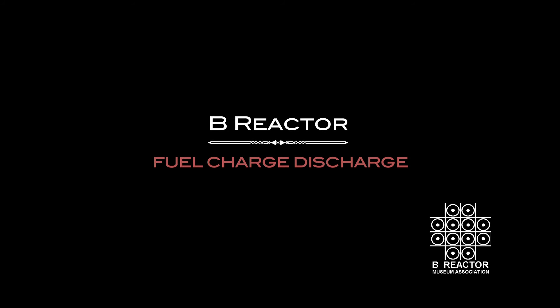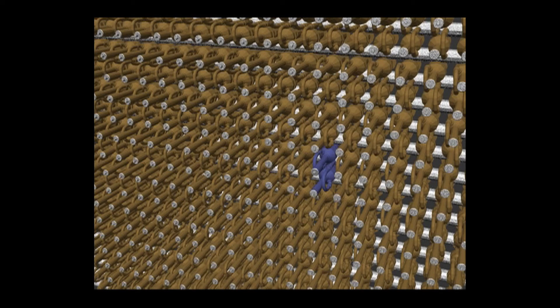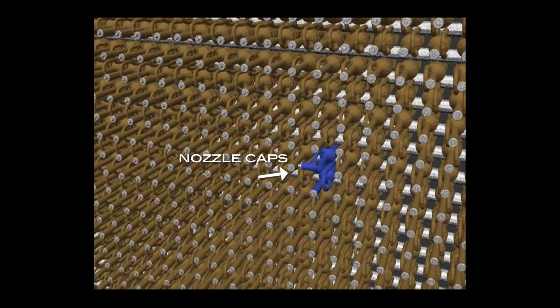Fuel charge discharge. To load a fuel column, the reactor is shut down, the water in the tube row of the tubes to be charged is reduced to a trickle flow, and nozzle caps on both ends of the tubes are removed.